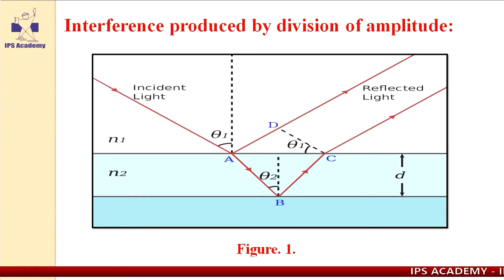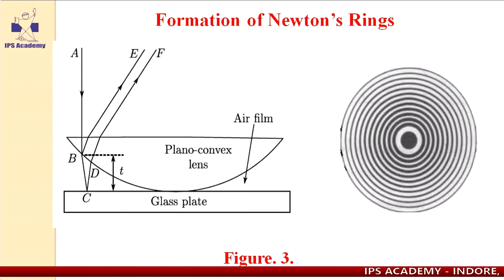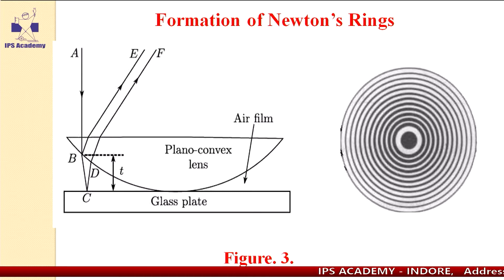Newton's ring experiment is because of division of amplitude. How are Newton's rings formed?